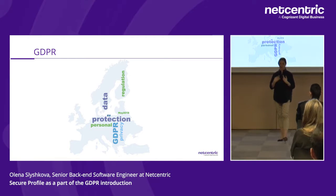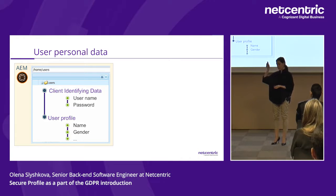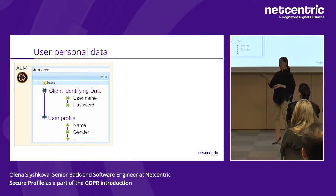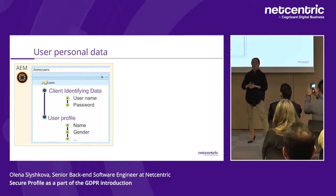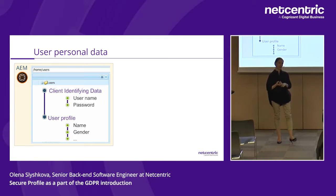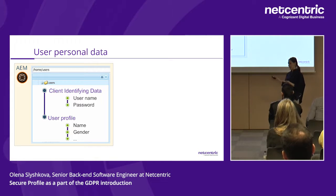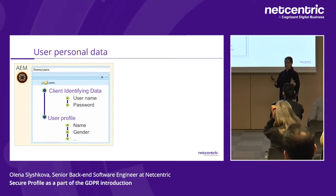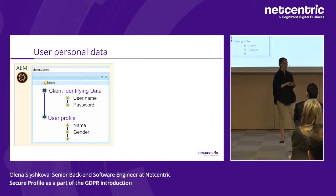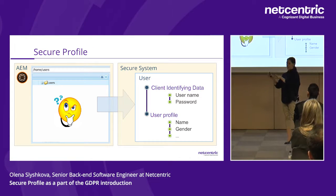Related changes have come into all projects, and the first corresponding change in my project touched user personal data. User personal data consists of two parts: the first is CID — client identifying data — which is the pair of user login and password; the second is the user profile, which includes information such as username, gender, email, and so on.